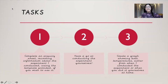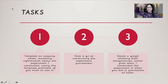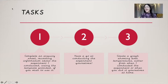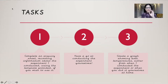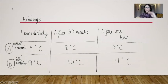Task number two is to have a go at conducting the experiment yourselves. All you really need are two thermometers — digital, manual, or any type you might have lying around at home or in school — and you will need a container to put on top of the thermometer. Remember the container has to be big enough to fit properly over the thermometer. Task number three is to create a graph showing both temperatures — the immediate temperatures, then after 30 minutes, then after one hour, but for both thermometers.